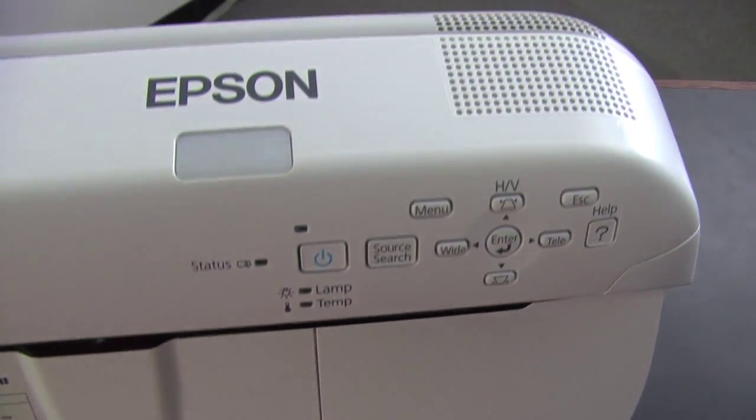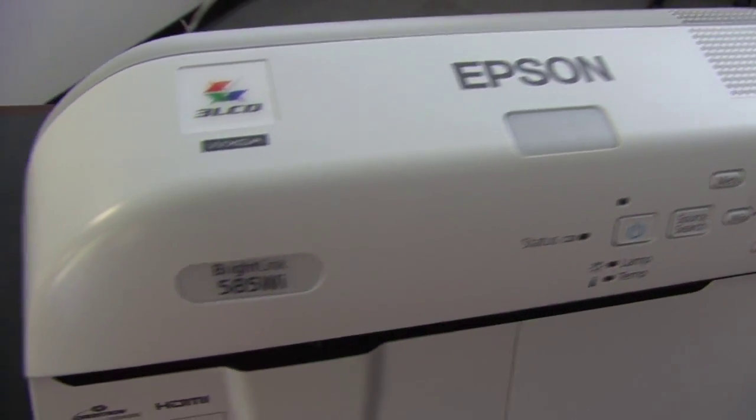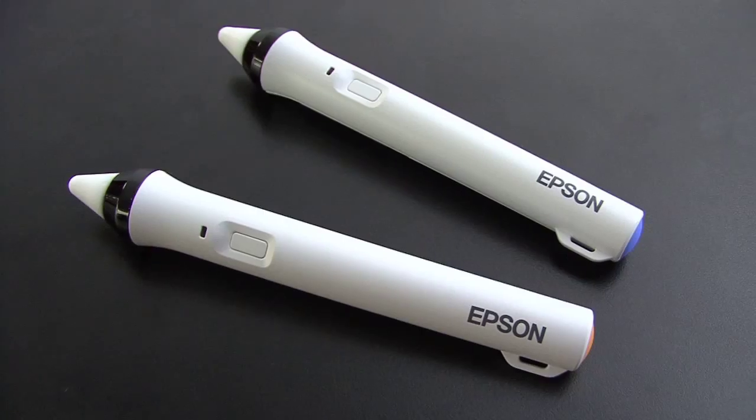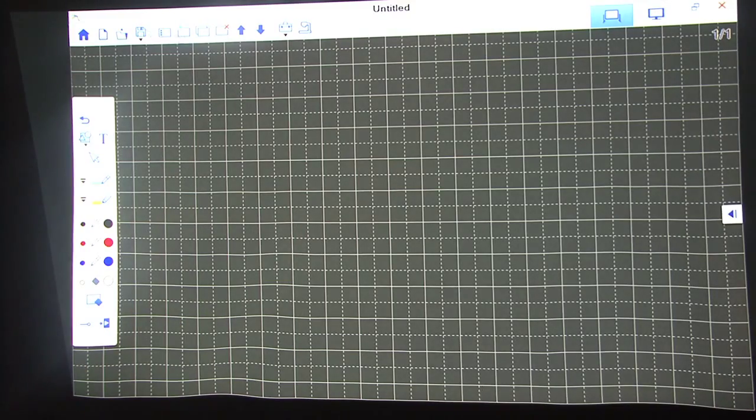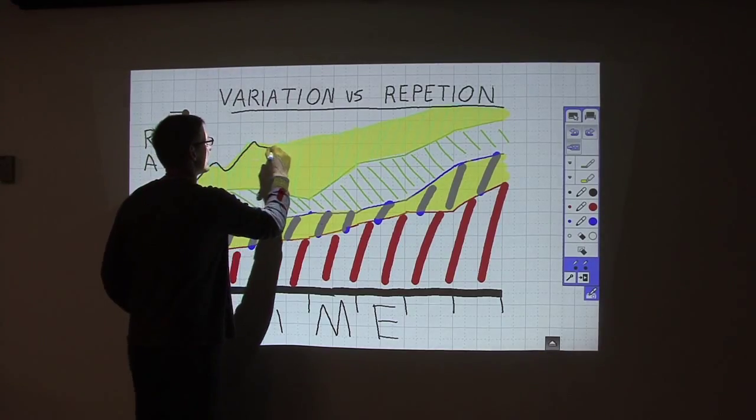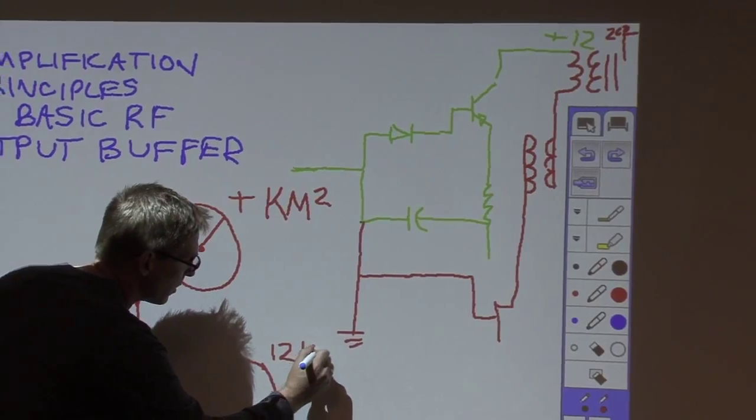So what have we learned? Well, the Epson 585Wi is a solid 3-LCD projector that includes two interactive pens, which can be used at the same time if needed. It ships with some very good annotation software and can be a whiteboard and a great teaching tool with or without a PC attached.